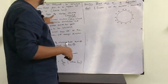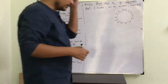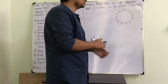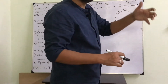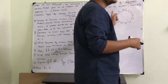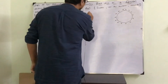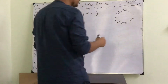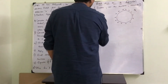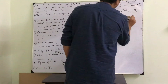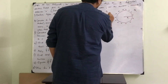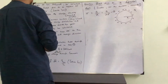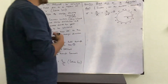Now, applying Gauss's Law, the first step is to define the type of charge density. Since a sphere is a three-dimensional shape but the charge is distributed only on the surface area — not over the volume — we define surface charge density: sigma equals Q divided by A, where Q is the total charge and A is the surface area 4πR², where R is the radius of the sphere.